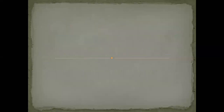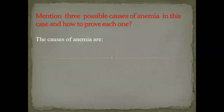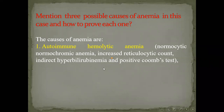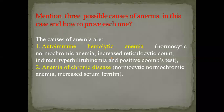Causes of anemia in lupus: first and commonest is autoimmune hemolytic anemia — normocytic, normochromic anemia with high reticulocyte count (bone marrow compensating for RBC destruction), indirect hyperbilirubinemia, and a positive Coombs test. The positive Coombs test is now one of the SLIC criteria. Second is anemia of chronic disease — normocytic, normochromic with elevated ferritin and normal or low iron levels.